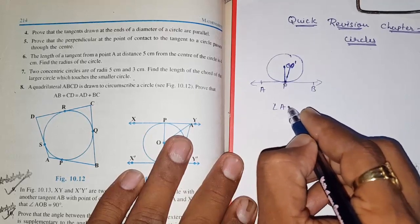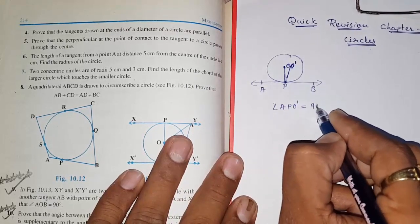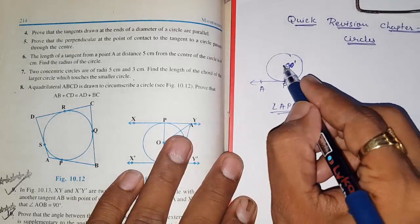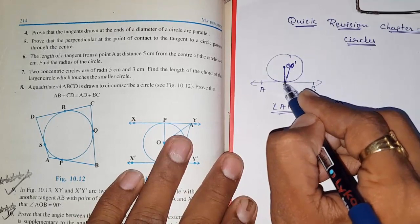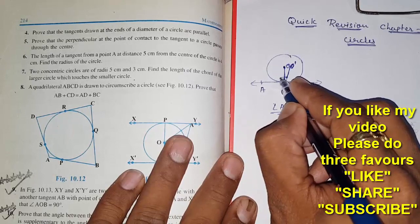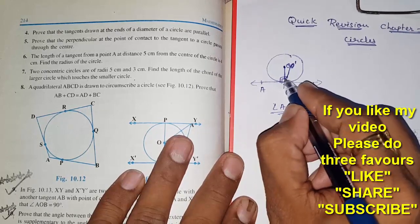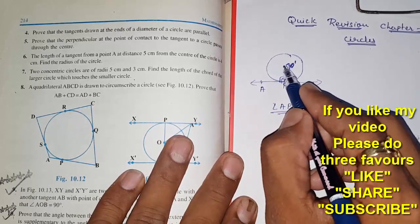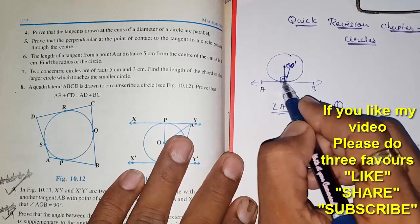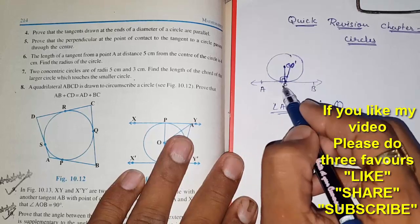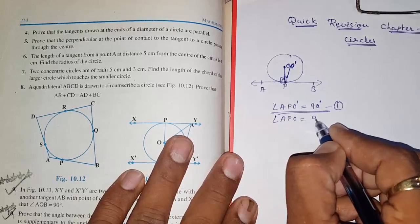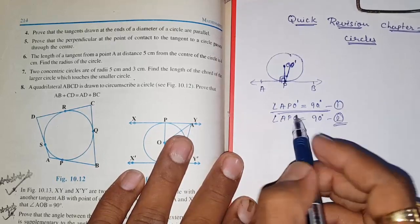We get that angle OPO-dash equals 90 degrees by construction — take it as Result 1. Now join from the center point to the point of contact. This will also be perpendicular, because by Theorem 10.1, if you join a line from the center to the point of contact, that line will be perpendicular to the tangent. So angle APO also equals 90 degrees — Result 2.